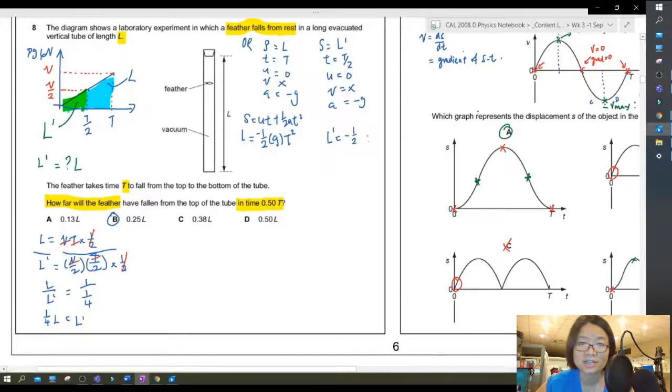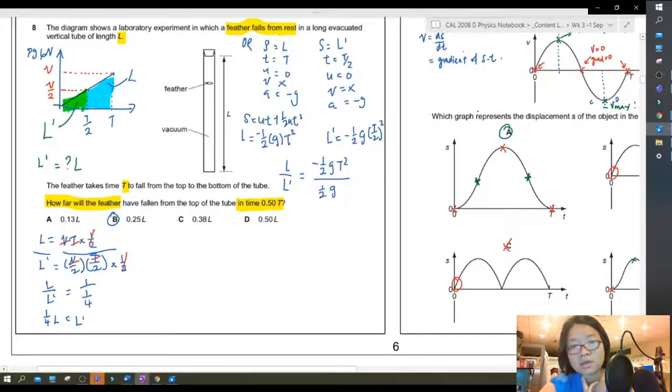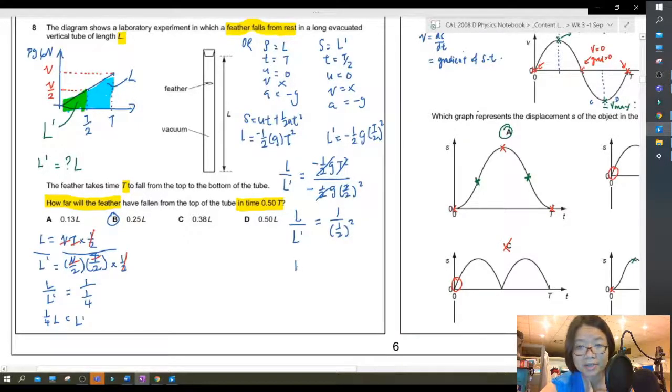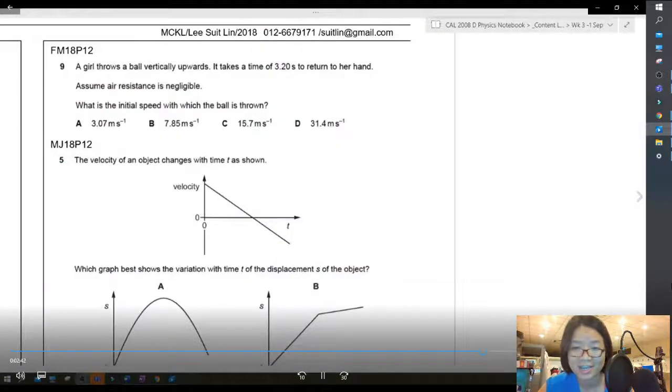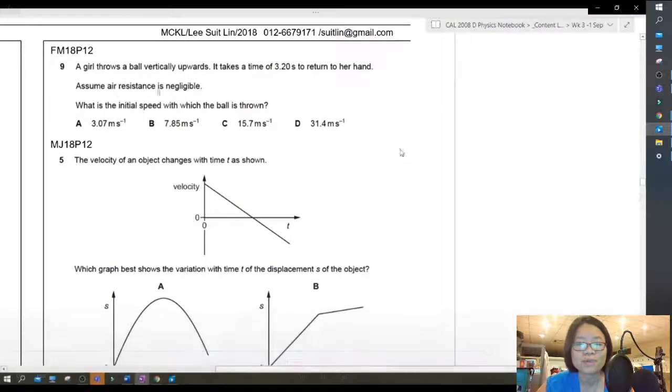So I will get L is equal to negative half g t square and L prime will be negative half g t over 2 square. Alright, so I divide both equations. Okay, so after dividing and simplifying and cancelling off all the like terms, I will end up with the same answer. Now, which one I recommend? As mentioned before, if you are in my class, it really depends on which one you are more comfortable with. Okay, they are both fine for me. Alright, next question.